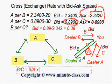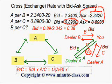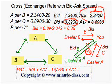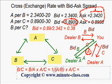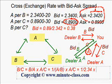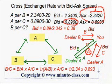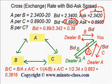We can easily calculate the ask price for B per C. B per C equals B per A times A per C — the A cancels out. B per A equals 1 over A per B, but since we are calculating the ask, we use the ask of B per A, which equals 1 over the bid of A per B. So: 1 over the A per B bid of 2.3400, times the A per C ask of 0.8930, gives you 0.3816.